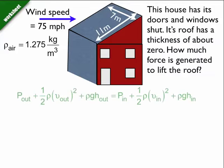So let's look at Bernoulli's equation. The pressure on the outside plus one-half rho times the velocity of the air on the outside squared, plus rho g h (that's the height outside), is equal to the pressure inside the house plus one-half rho times the velocity of the air inside the house squared, plus rho g h inside the house.